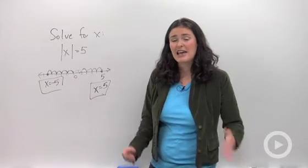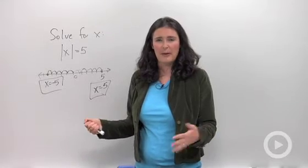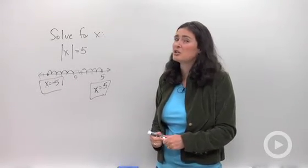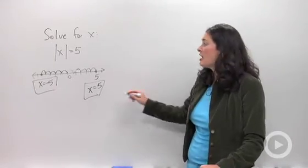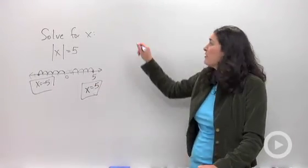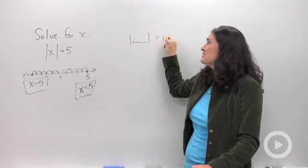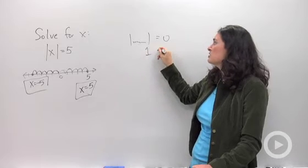The next thing you want to keep in mind is when you get to the bottom of your problem and you're trying to figure out how many answers you have, there's a couple little secrets you can remind yourself of. Most of the time, you're going to get two answers. However, if you have something where your absolute value is equal to zero, that means you're only going to have one solution.